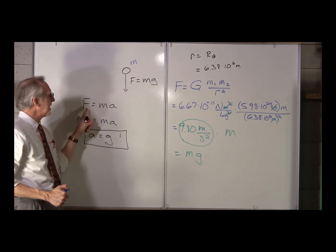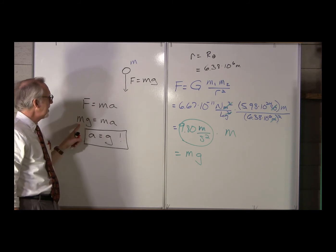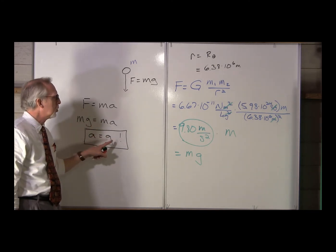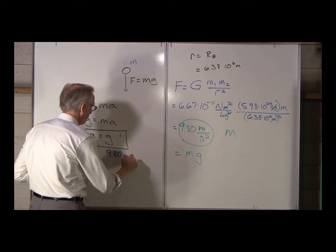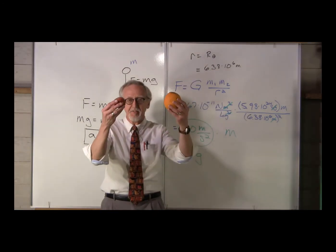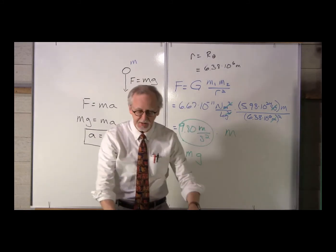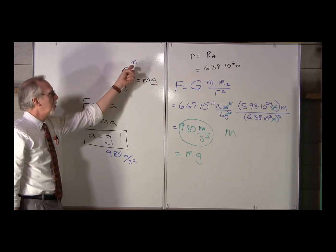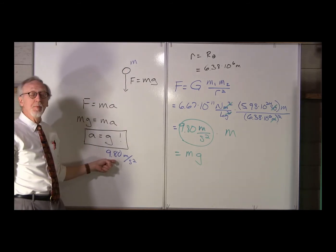The gravitational attraction from the Earth has a magnitude of what we just found: M times g. If that's the only force acting on the object, we know from Newton's second law the force must equal mass times acceleration. So we have Mg must equal Ma. Dividing both sides by M, we get acceleration equals g — in other words, 9.80 meters per second squared. Regardless of the object, it doesn't matter what the mass is; the acceleration equals g regardless of the mass.